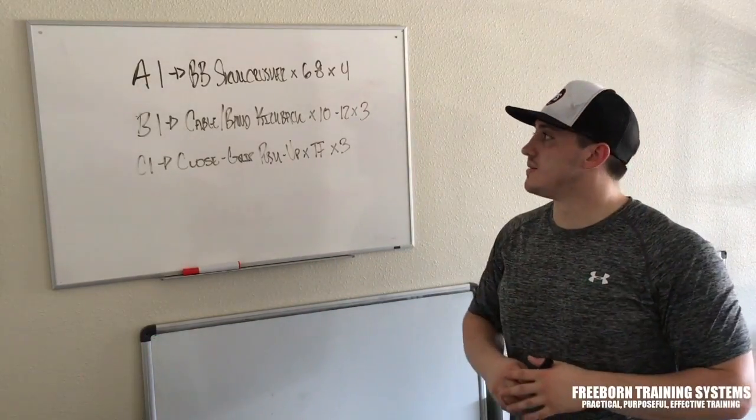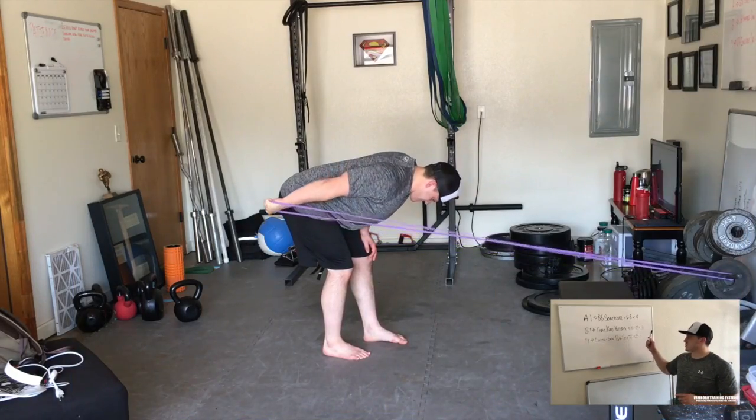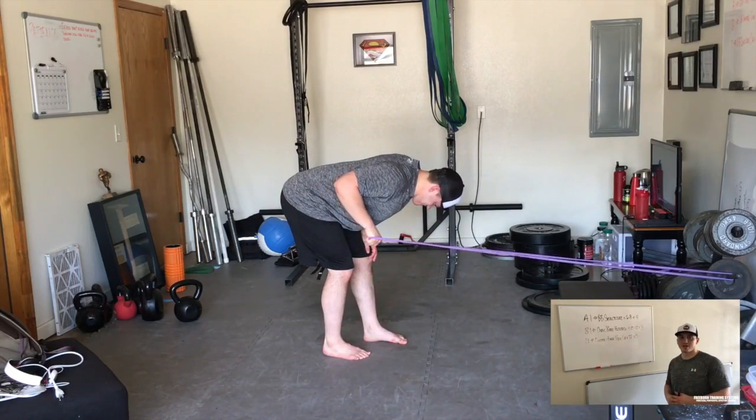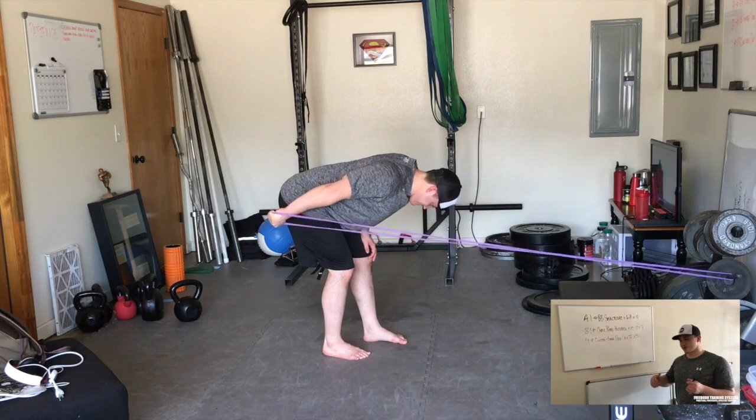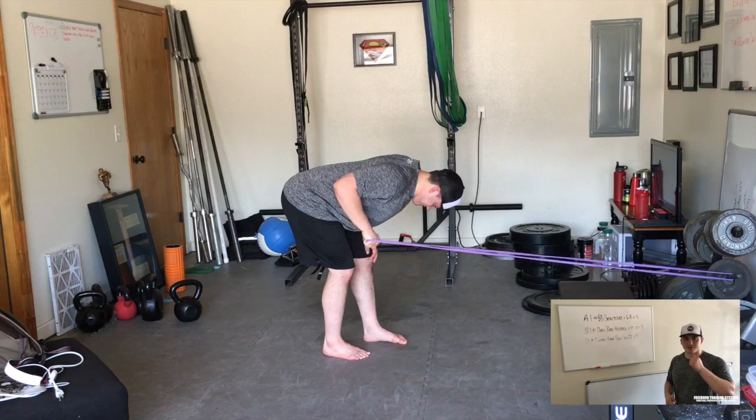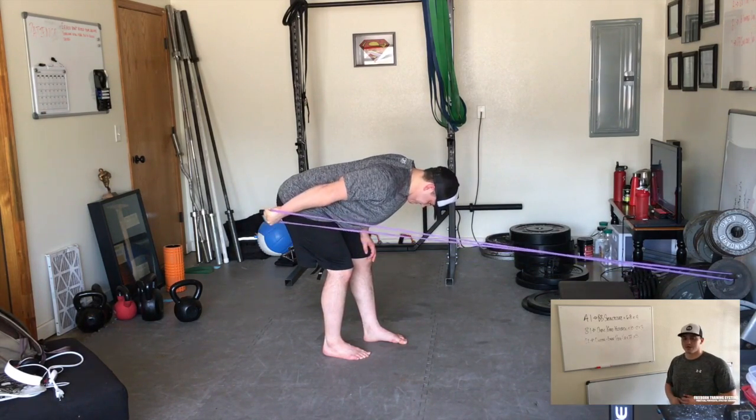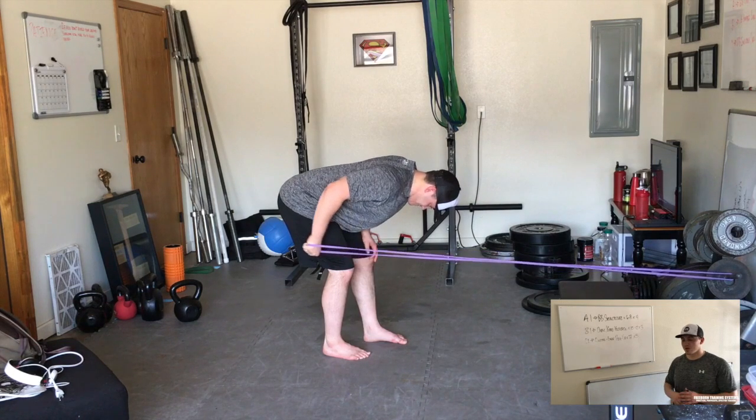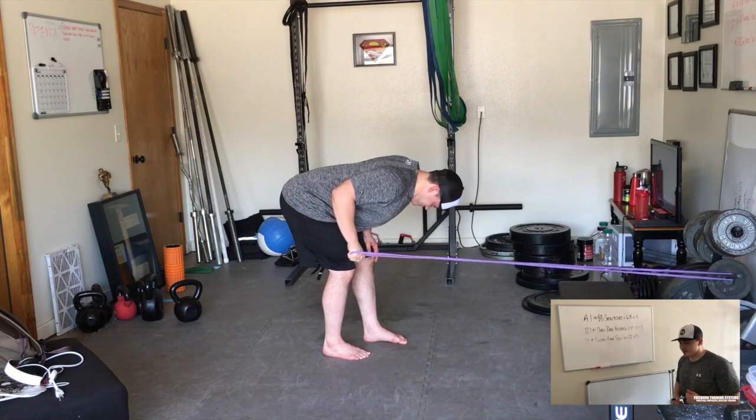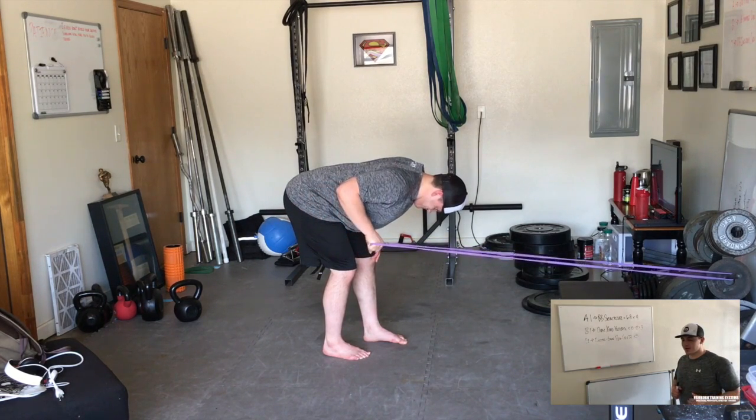The second exercise I always have people go to next is the cable or the band kickback. I'm going to demonstrate it here with the band because I train out of my garage, but if you have access to a cable machine, same motion, same setup. Just adjust the cable till it's about hip height. You'll bend over, back flat, bring the elbow right next to the side of your body.